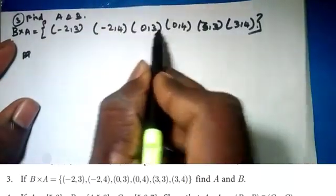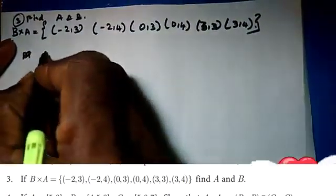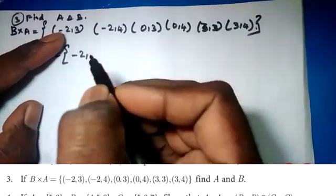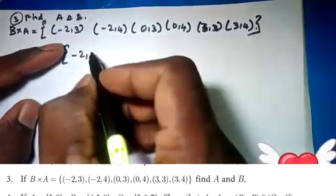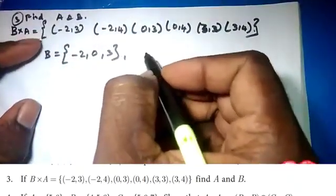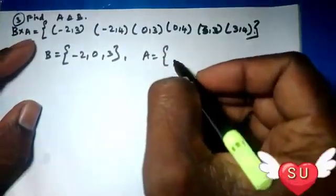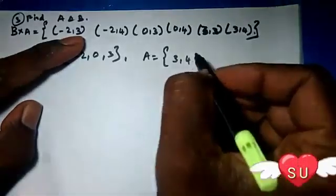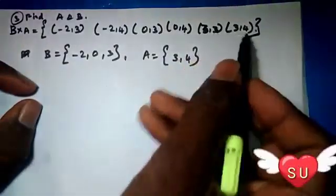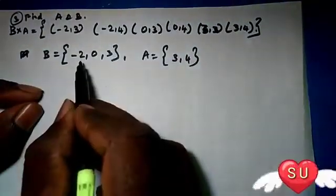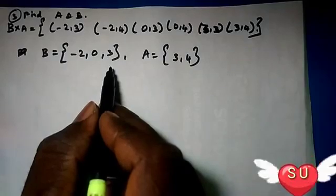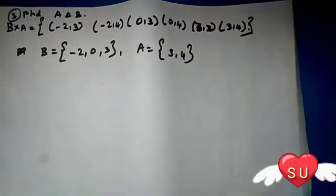So it is 3, 4. If we see the values, it is minus 2, minus 2. B sets: minus 2. Next b set: 0. Next: 2 values. Now this is 3. A value: 3, 4. Next: 3, 4; 3, 4. So 3, 2, 6.